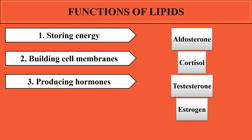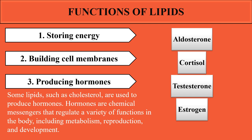Lipids are also utilized for the production of different hormones. One classification of lipids includes steroids, or cholesterol, which are used for hormone production. These hormones — derived from cholesterol — are used in metabolism, reproduction, and development. Examples include aldosterone and cortisol, which are involved in metabolism and development of the body.